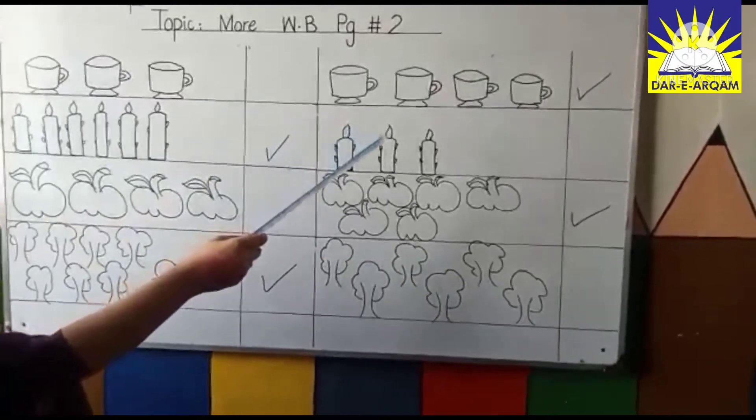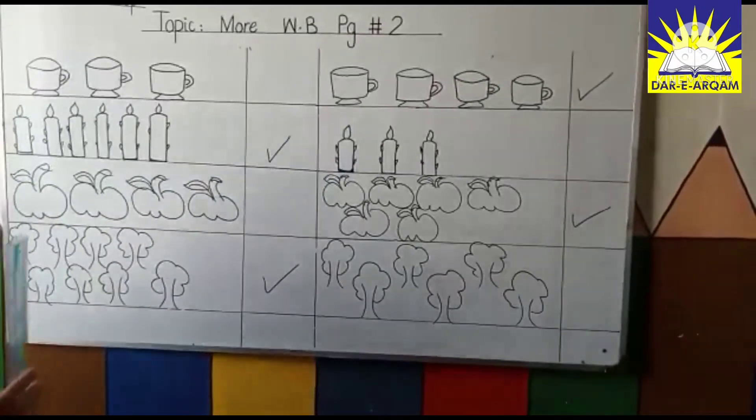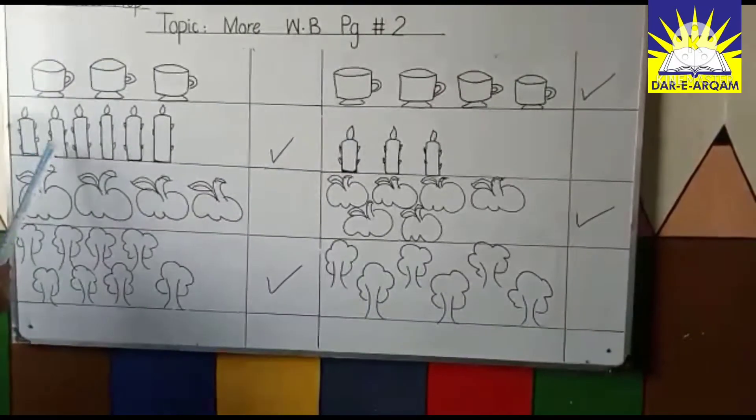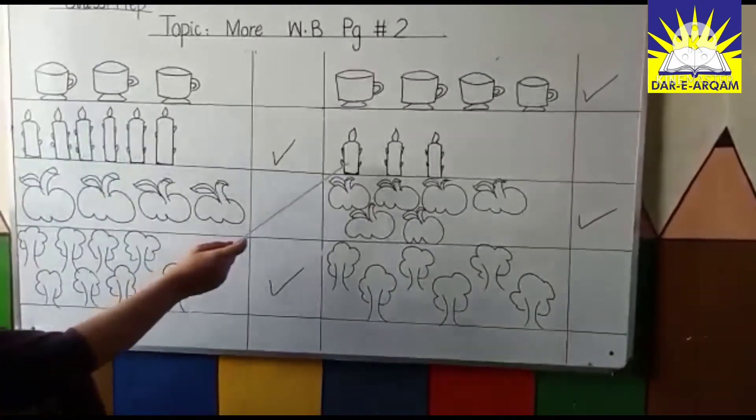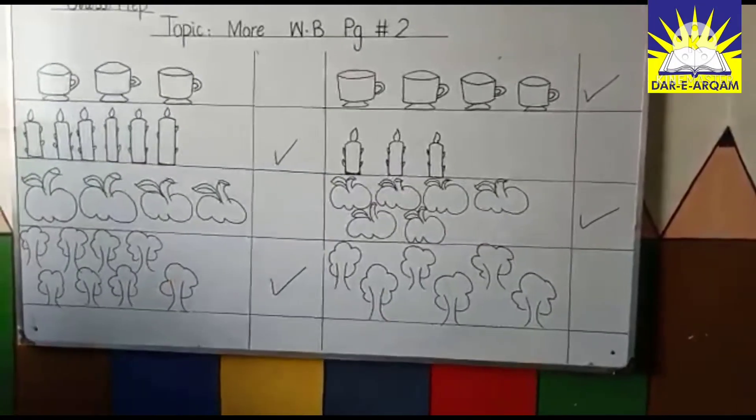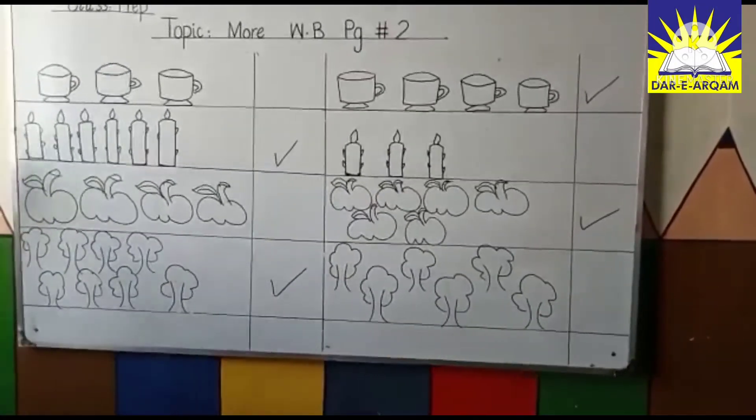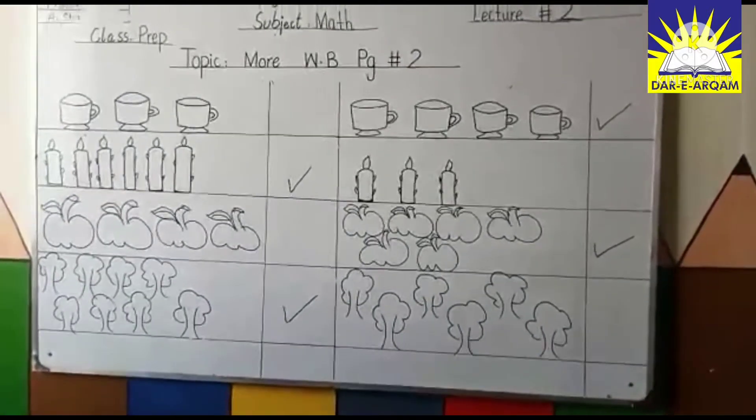This set mein zyada candles hain, is mein aapko tick lagana hai. Let's count the candles. One, two, three, four, five, six. And one, two, three. This set has more candles, so you put a tick here.